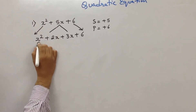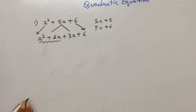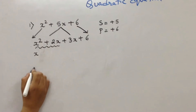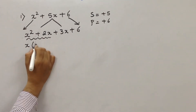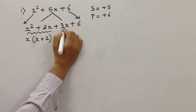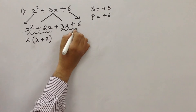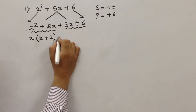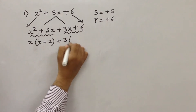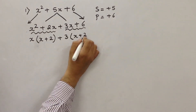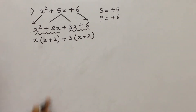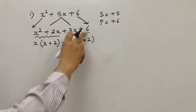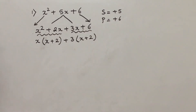Now we need to factorize. When we factorize from the first two terms, x is getting common — I get x plus 2. From the second two terms, 3 is getting common — I get x plus 2 again. Always cross-check: 3 into x is 3x, 3 into plus 2 is plus 6. That means whatever we have done is absolutely correct.